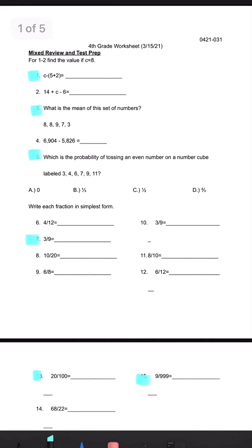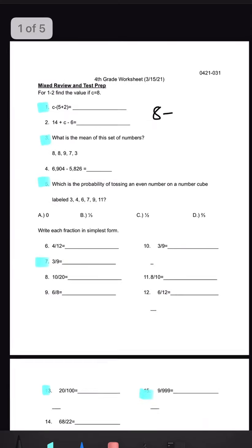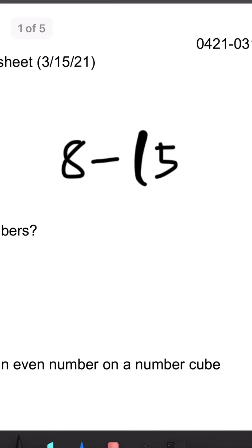Number 1 says C minus 5 plus 2. And before it says for 1 through 2, find the value if C equals 8. So let's write the problem again. 8 minus 5 plus 2. We'll be using PEMDAS.